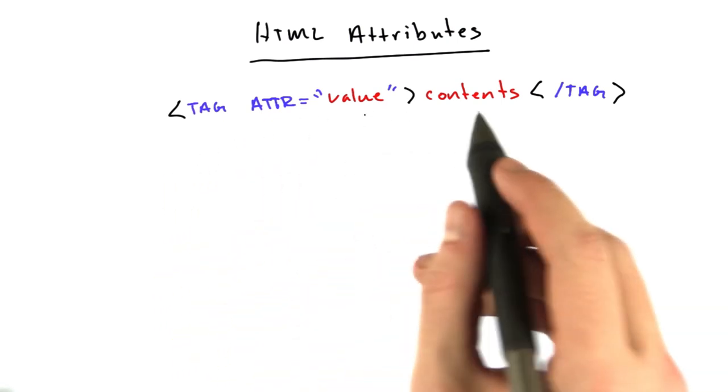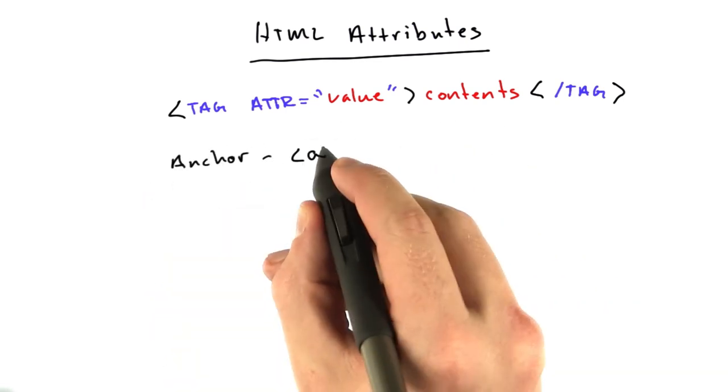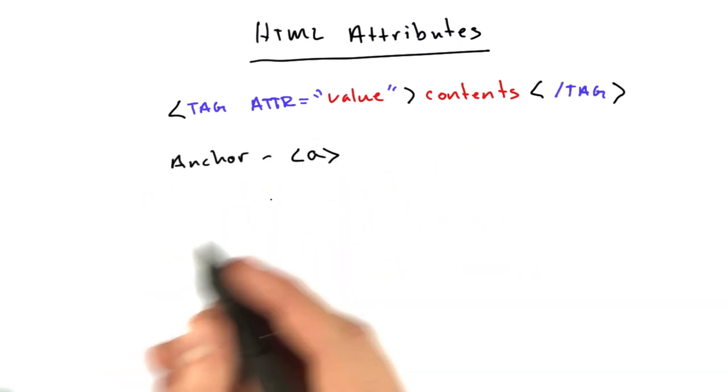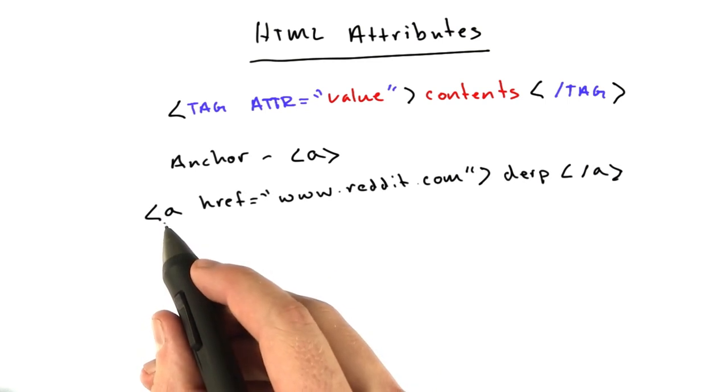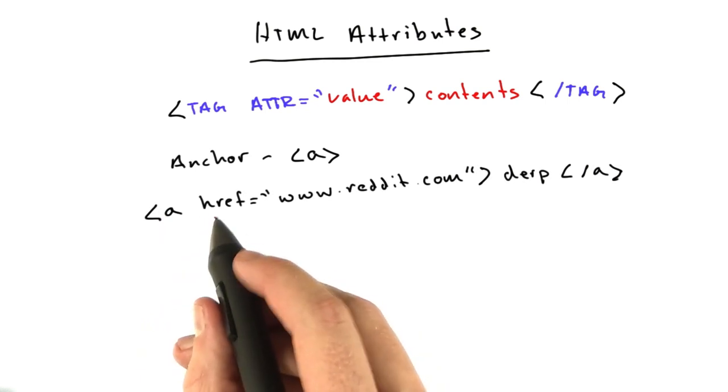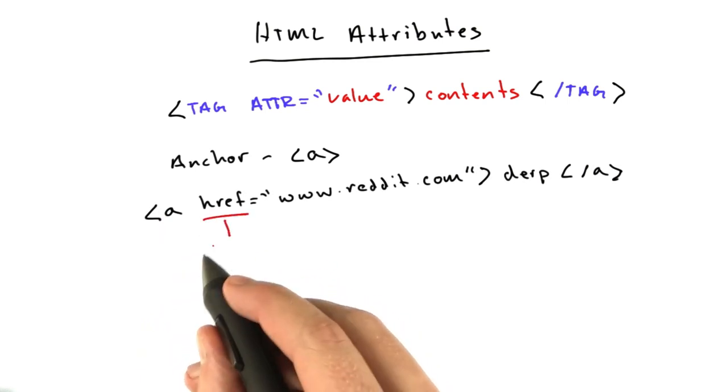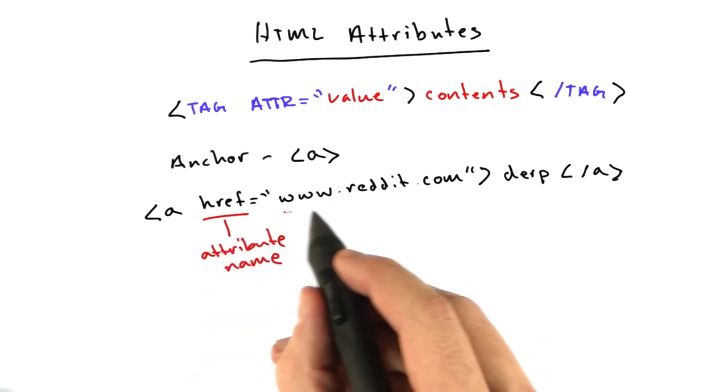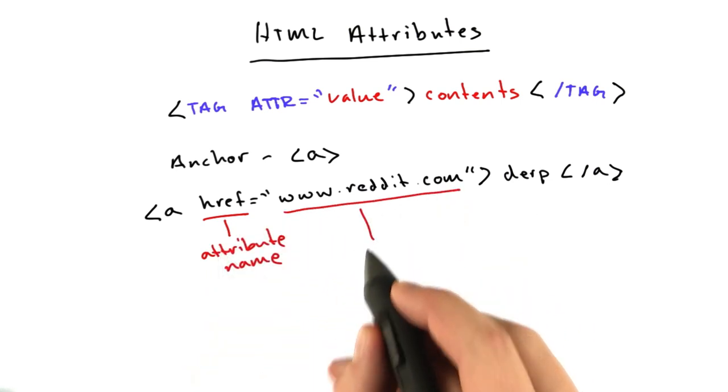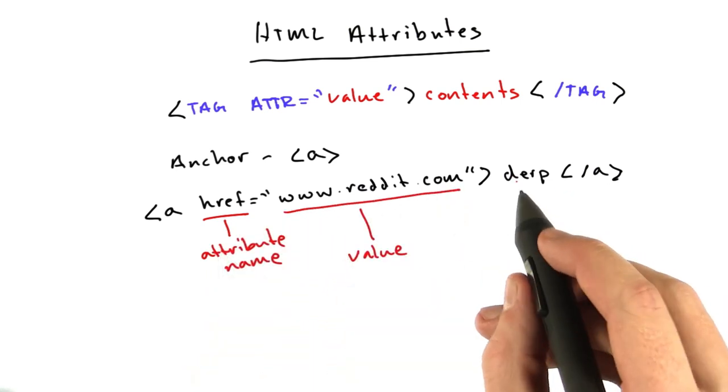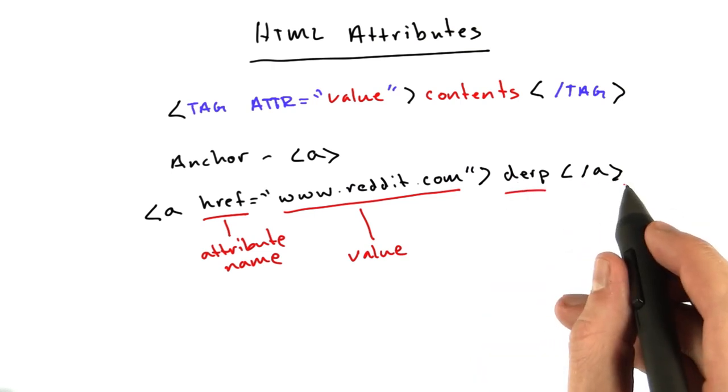An example of a tag that uses an attribute is the anchor tag, which is the A tag. And a full example looks something like this. You've got the opening A. You've got an attribute called href. You've got its value, which in this case is a URL. You've got the contents. And then you've got the closing anchor tag.